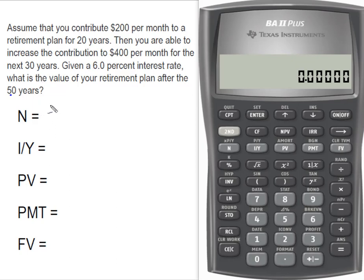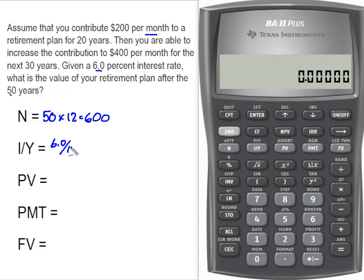Let's start with the first one. Our N is 50 years times 12 months, giving us an N of 600. We're making monthly payments and getting a 6% rate, so we divide that by 12 to get the monthly rate, giving us 0.50 as our I/Y. The present value is 0 — remember annuities are made at the end of the month — and our payment is going to be negative $200, and we're going to compute the future value.